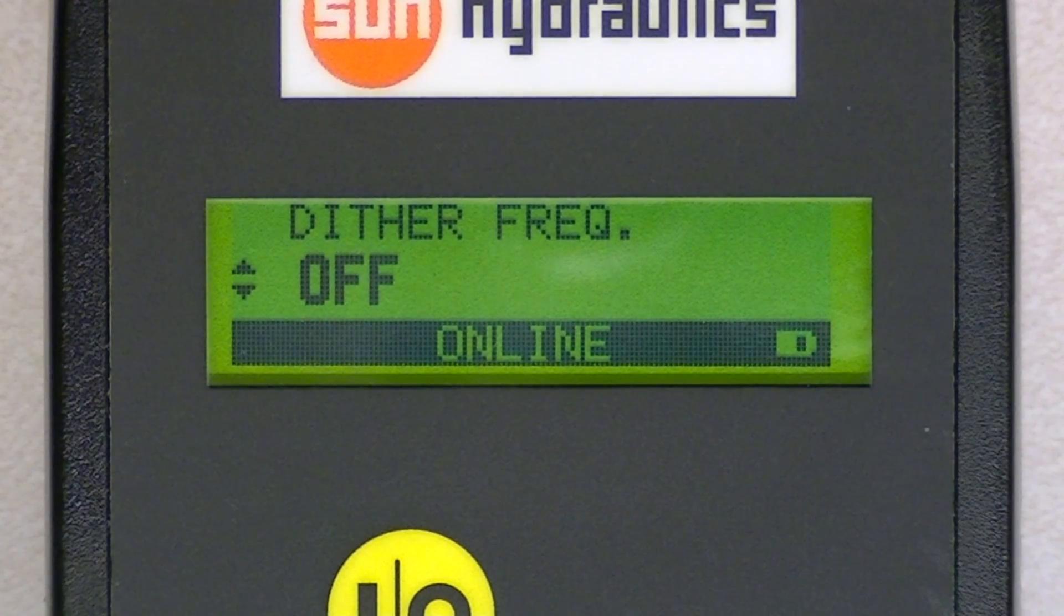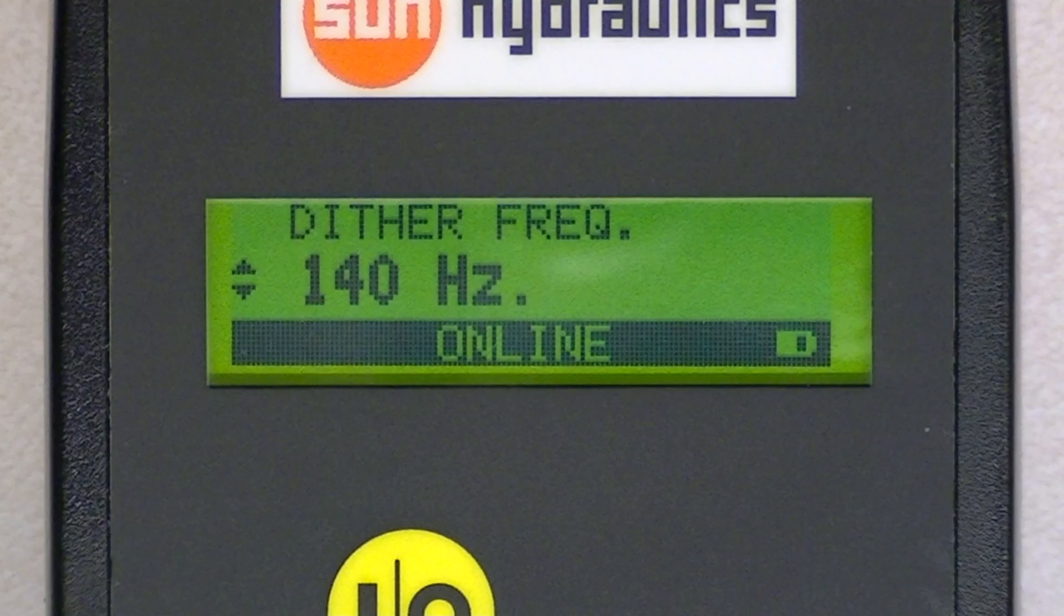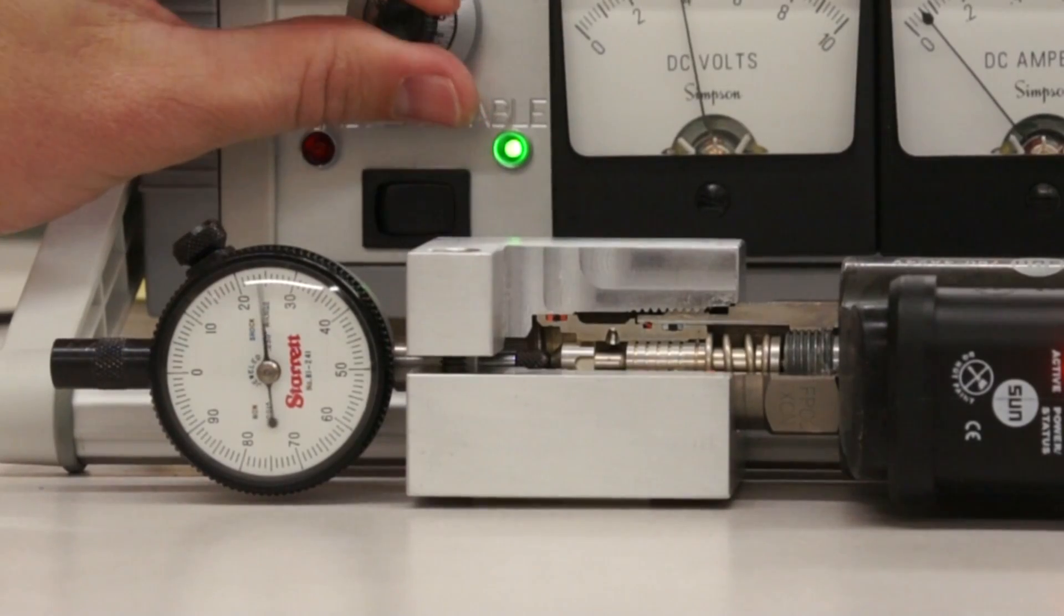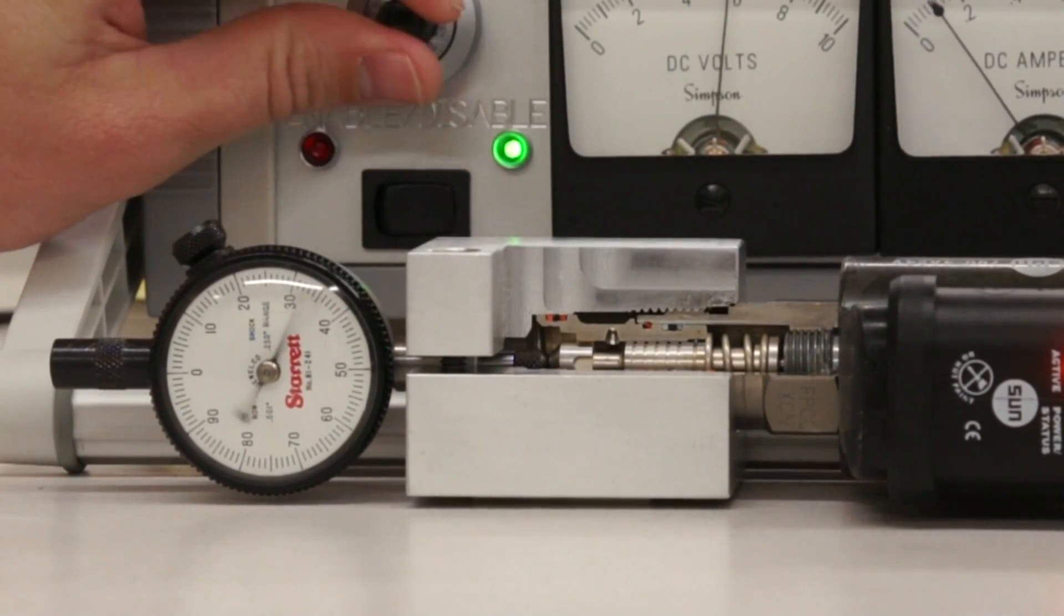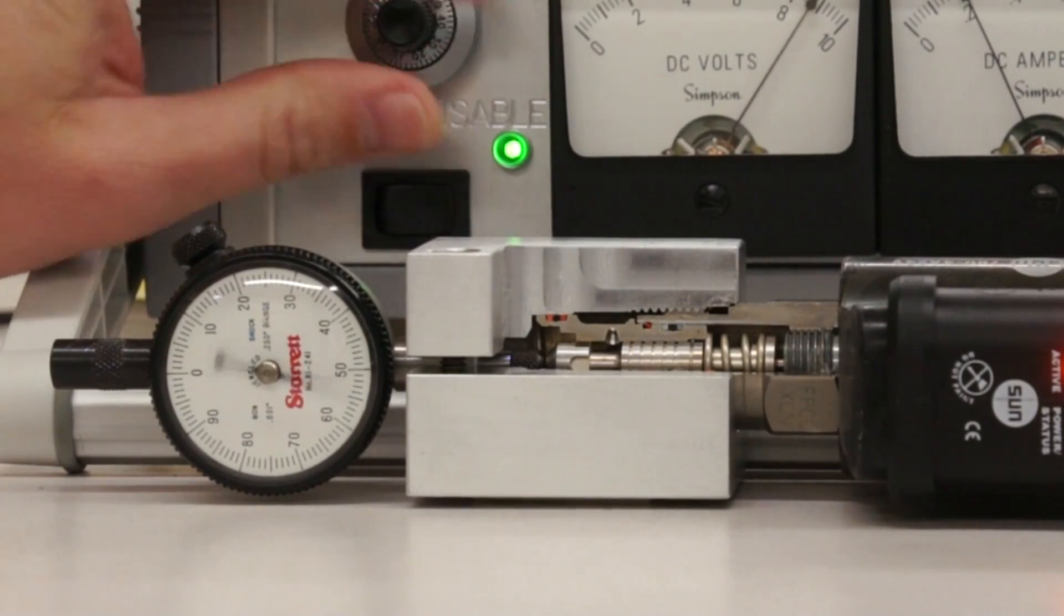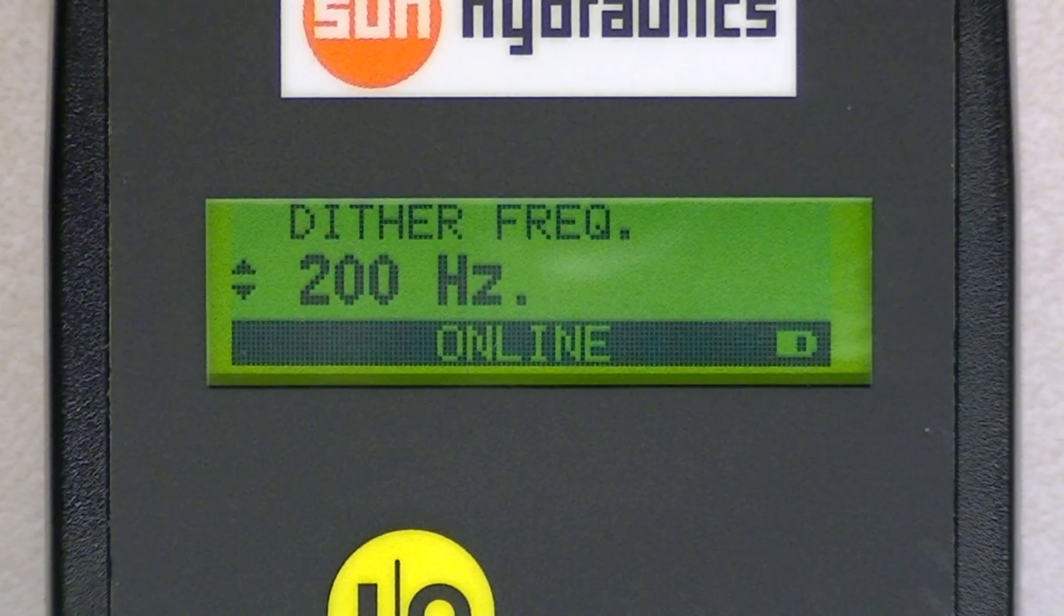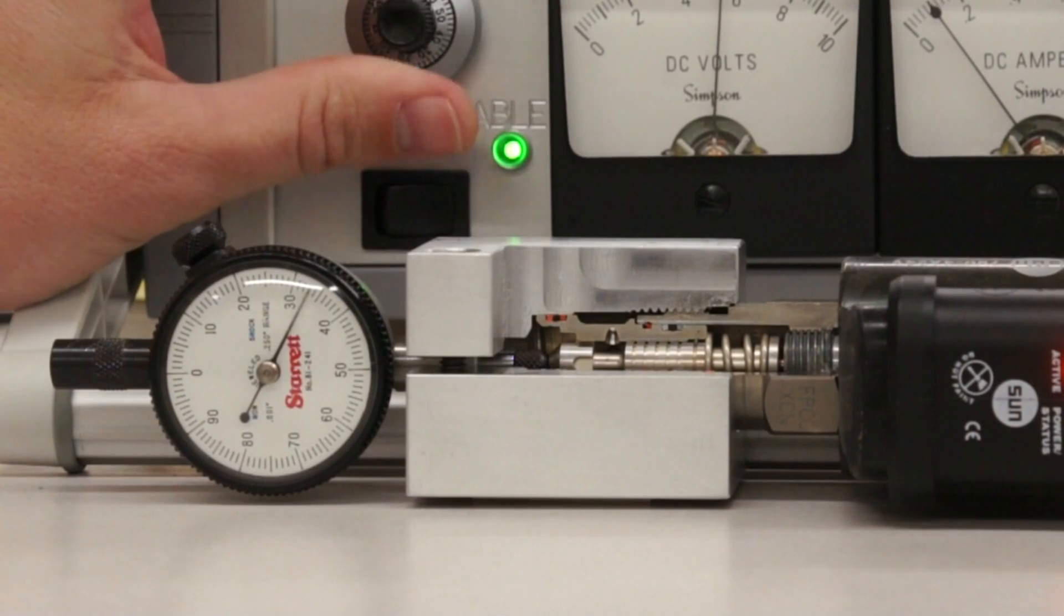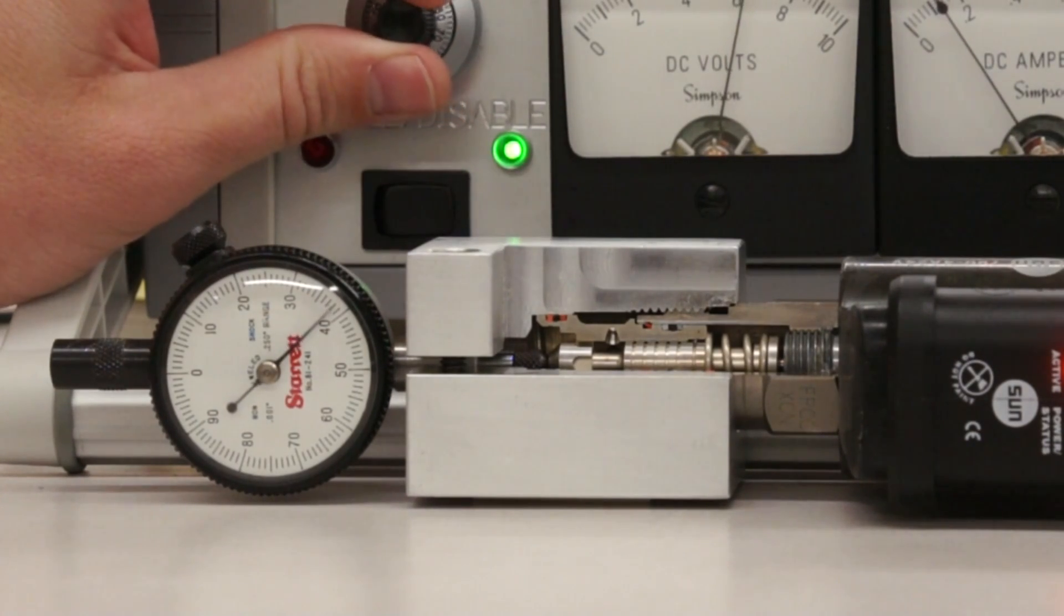However, when we turn our dither frequency back on, you'll notice that this sticking tendency is no longer present due to the dither. If we increase the frequency to 200 Hertz, you'll notice that the spool shifts its position much more smoothly, whereas before with the dither off it sticks.